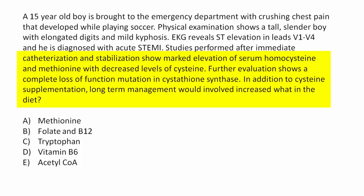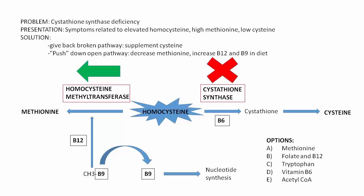Further evaluation shows a complete loss-of-function mutation in cystathionine synthase. In addition to cysteine supplementation, long-term management would involve increased what in the diet? We know there's a problem with getting rid of homocysteine, and they've given us the broken pathway. With broken cystathionine synthase, we need to give back what's missing — cysteine — and supplement to push homocysteine in the other direction. To push homocysteine to the left, we need to give back B12 and B9, which is option B.